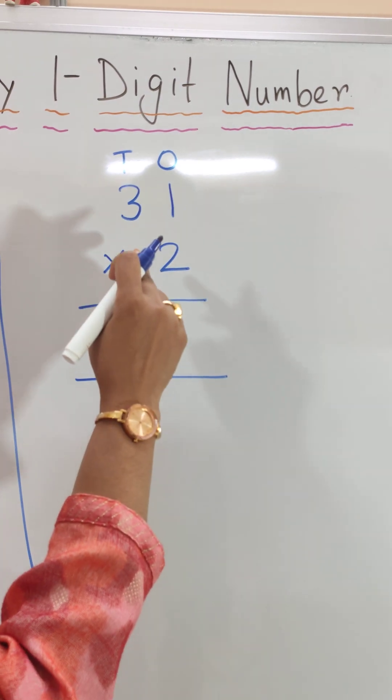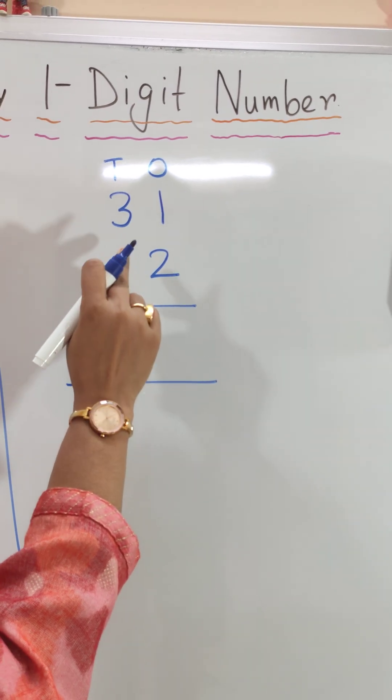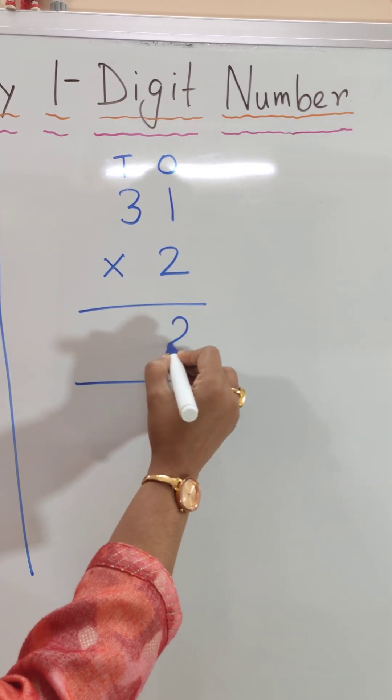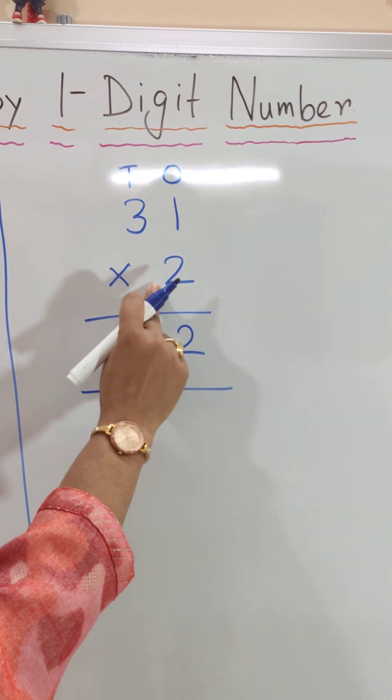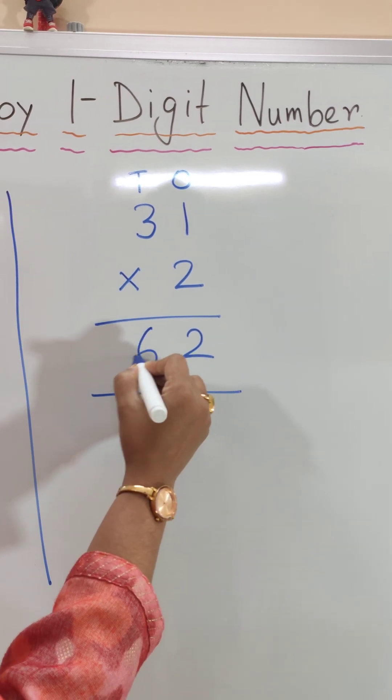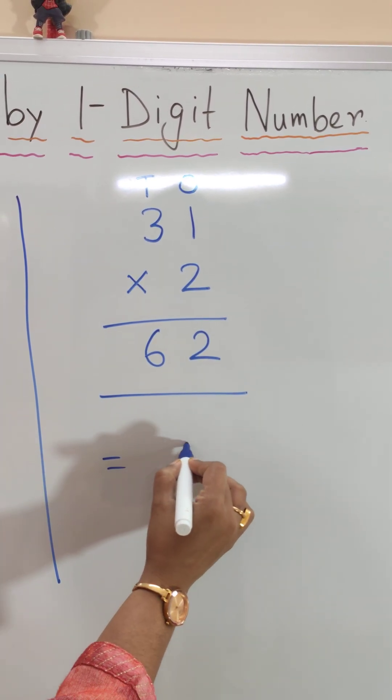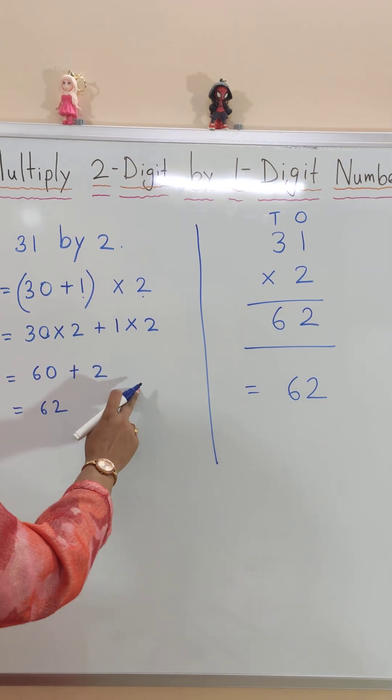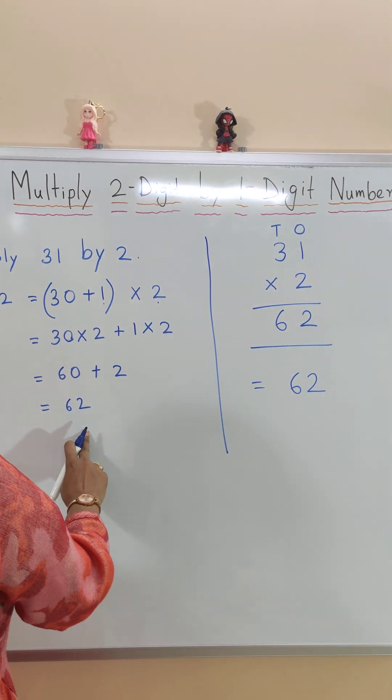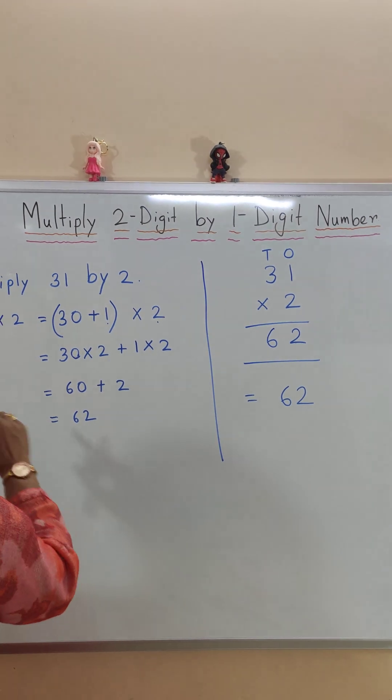First we will multiply the one's place by 2. So 2 times 1 is 2. Now we will multiply the ten's place by 2. So 3 times 2 is 6. So our answer is 62. In both methods we get the answer 62 after doing multiplication.